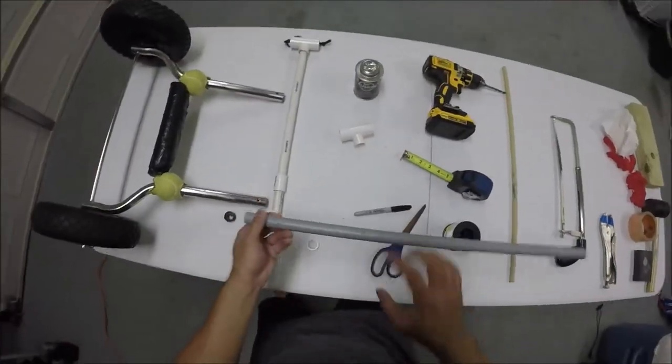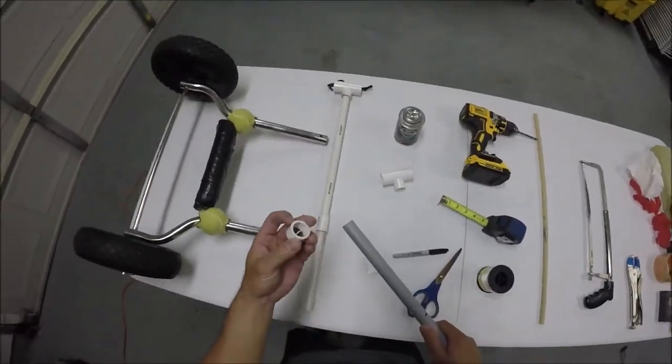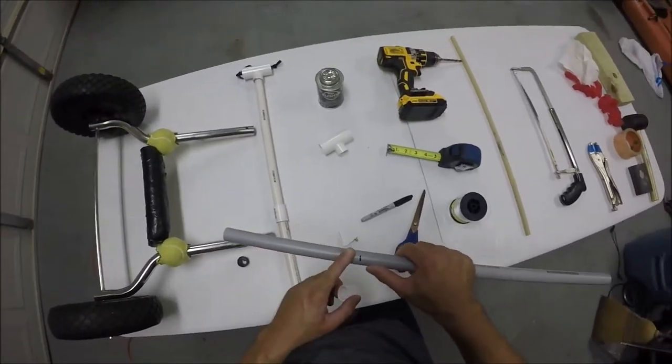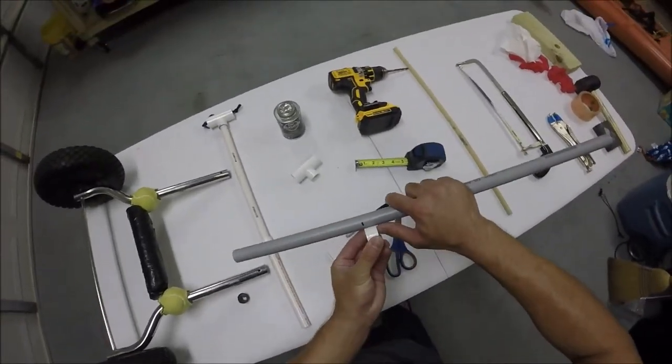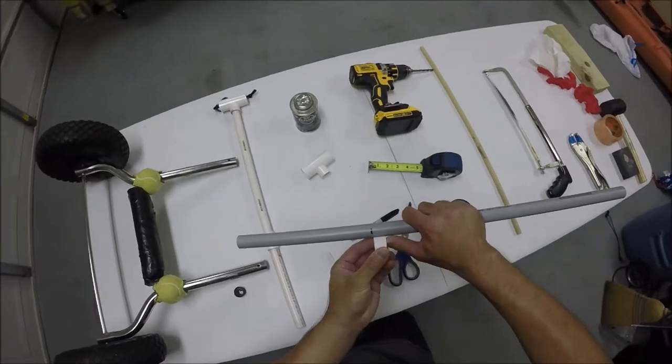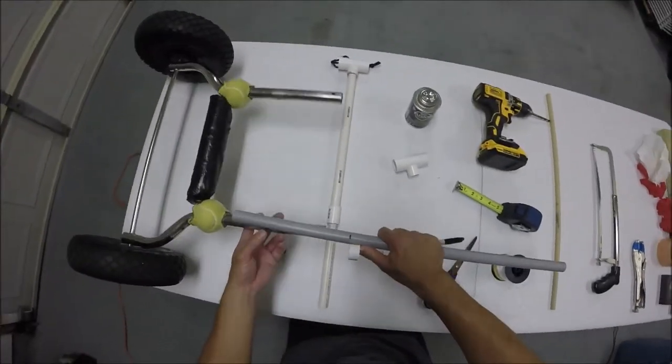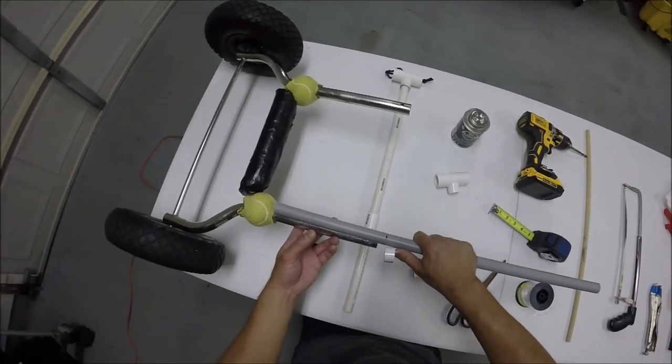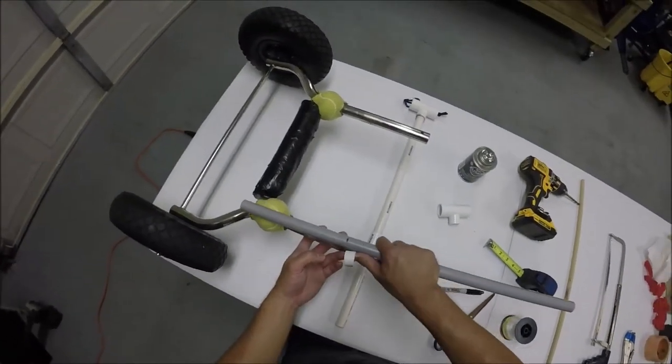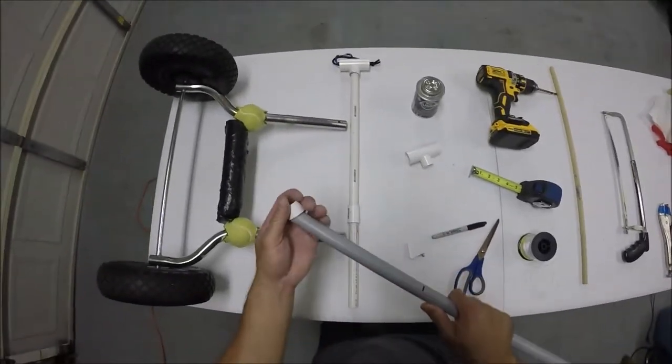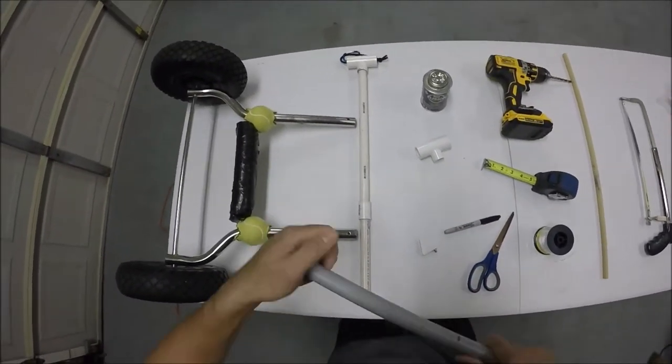Okay, so next you're gonna want to install the ring that you just cut onto the PVC pipe. And it's gonna be down to 8 inches. And this is gonna act as a stop so that it prevents the PVC tube from going too far down into the post of the cart.